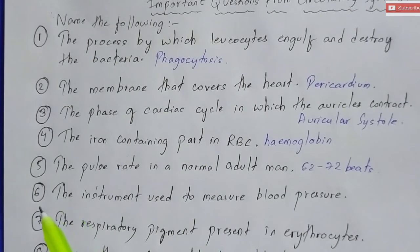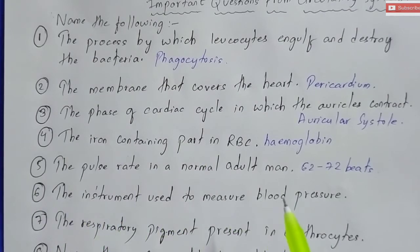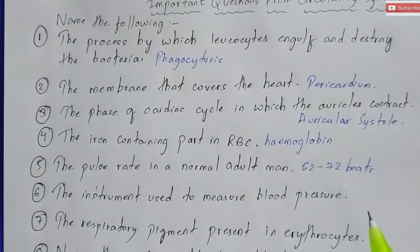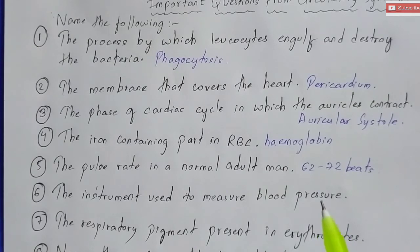Question number six: the instrument that is used to measure BP, that is blood pressure. You are going to write the answer to this in the comment section and then we are going to come back to you. It is very easy — you have to name the instrument used to measure blood pressure.